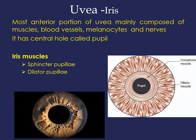The dilator pupillae dilates the pupil and has sympathetic nerve supply via long ciliary nerves, which are branches of the ophthalmic division of the fifth cranial nerve. The pupil controls the amount of light entering the eye — in dim light it dilates to allow more light in, while in bright light it constricts to restrict excessive light that might damage the retina.